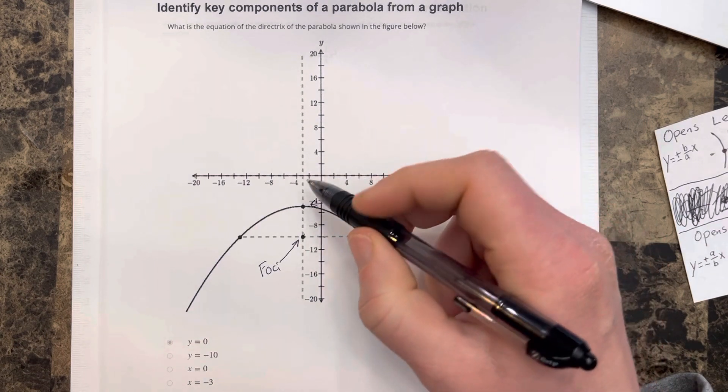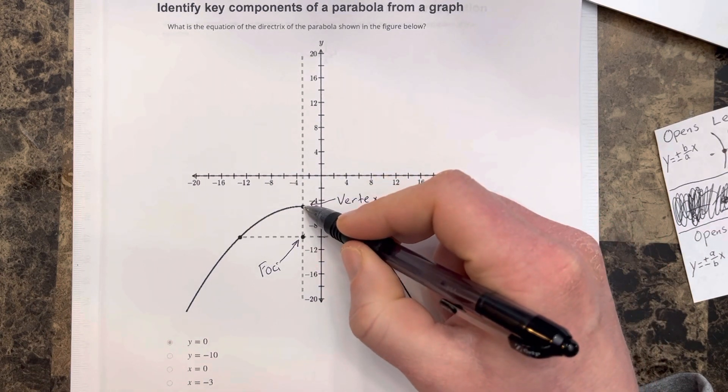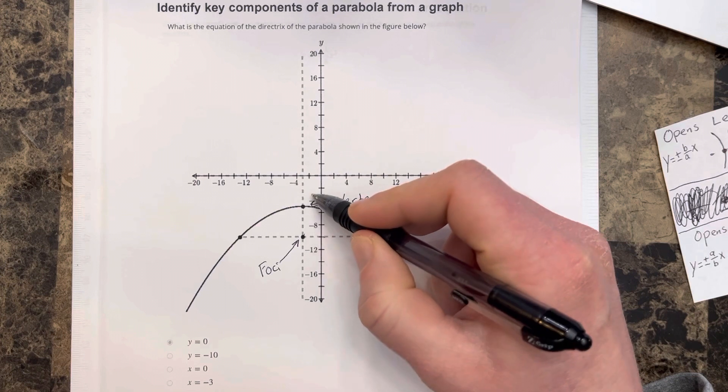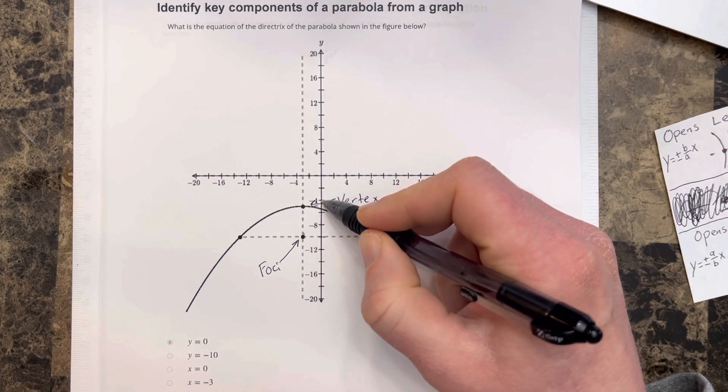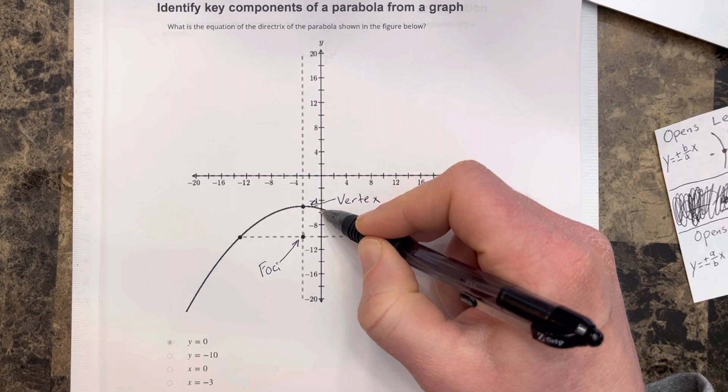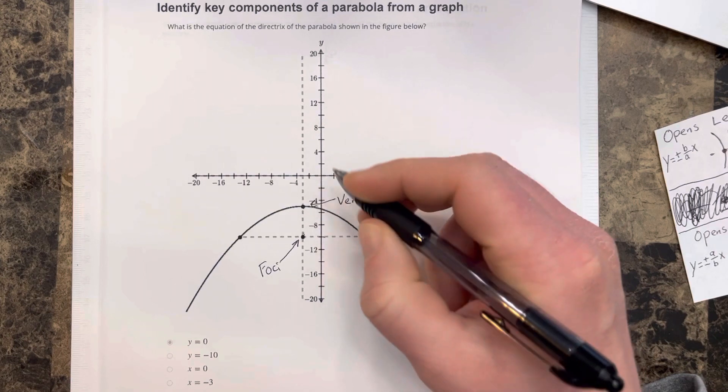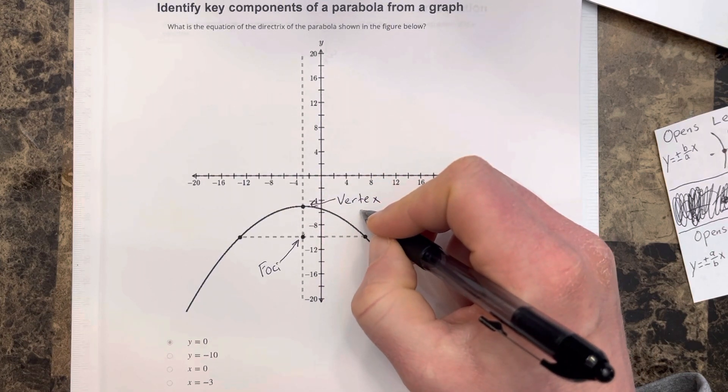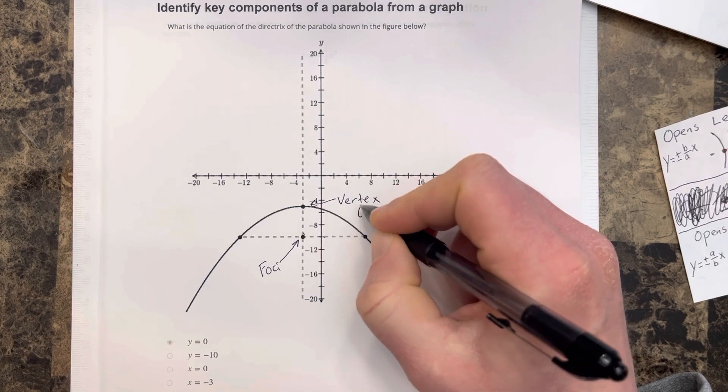The vertex looks to be from negative 11 to negative, let's see, negative 4. That'd be negative 6, so this would be at negative 5. So our vertex is at a y-value of negative 5.